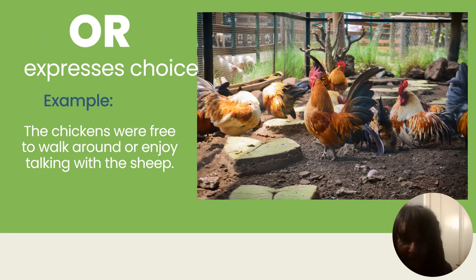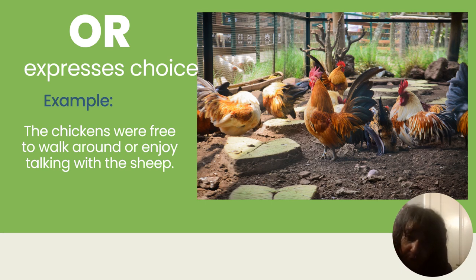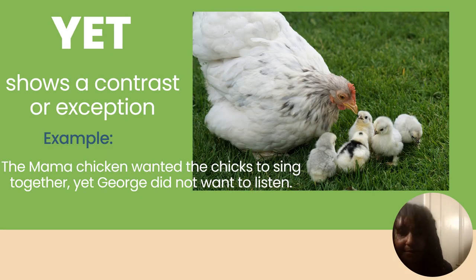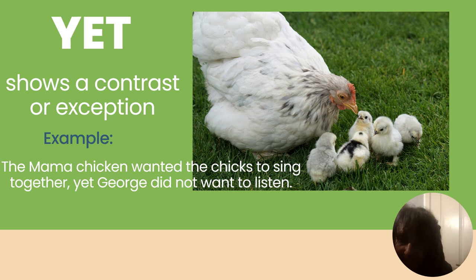In the acronym FANBOYS, the O represents OR, and it expresses choice. Example: The chickens were free to walk around or enjoy talking with the sheep — two full thoughts put together. For YET: it shows a contrast or an exception. Example: The mama chicken wanted the chicks to sing together, yet George did not want to listen. The word YET brings those two thoughts together in a cohesive way, letting you know that two different things are going on — they're contrasting each other.